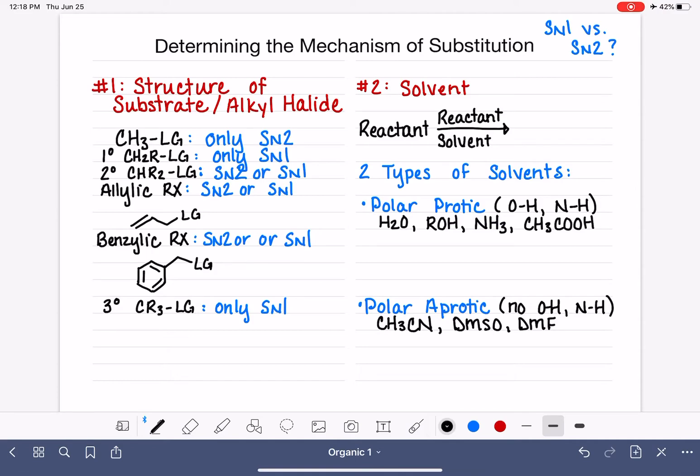Why do we need these two different types of solvents? For the polar protic solvent, because it has that proton, that acidic proton, it's extremely polar. These solvents will stabilize ions, and the polar aprotic does not stabilize ions.